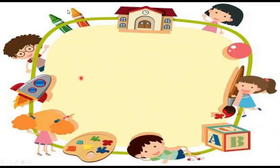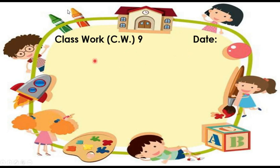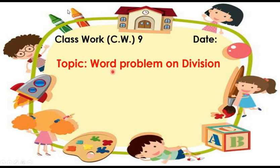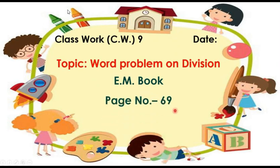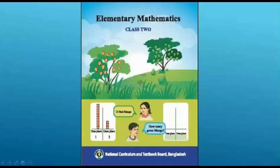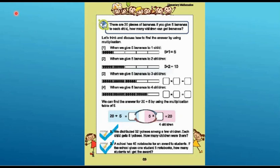Students, take out your CW copy and write the top of the page: today's classwork number and date. Then write today's topic name: word problem on division. Then write your book's name — elementary math book — then write page number 69, exercise number 1 and 2. Now check out your elementary mathematics book and go to page number 69.